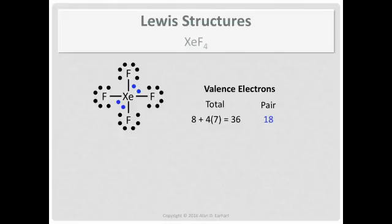If you check the formal charges of all the atoms, you'll see that each of the fluorines has a zero formal charge and xenon has a zero formal charge. So this Lewis structure is finished.